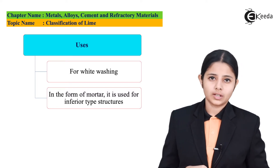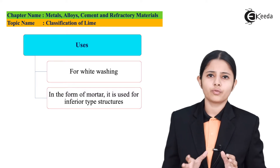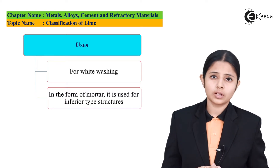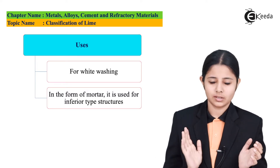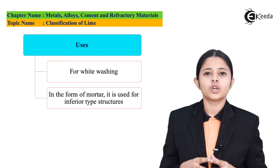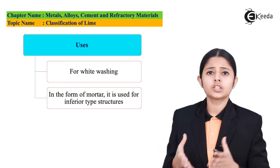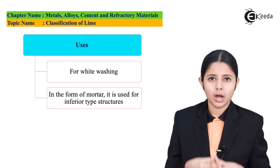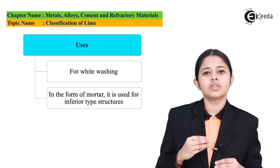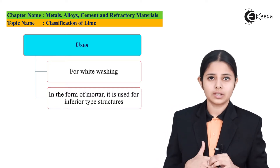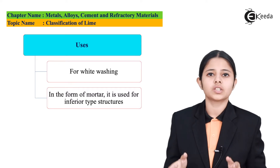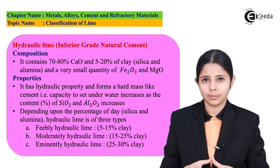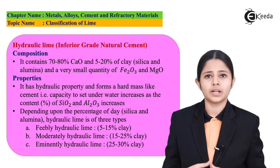The third type of lime is hydraulic lime. Hydraulic lime consists of 70–80% of calcium oxides and around 5–20% of clay. Along with this it also contains magnesium oxides and iron oxides. It is called hydraulic lime because of its hydraulic properties — it has the property of setting up into a mass in the presence of water. The capacity to set under water increases with the increase of silicates and aluminates present in the lime. Clay is an important component, making up about 5–20% of hydraulic lime.